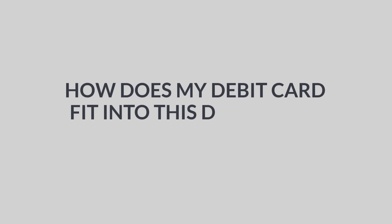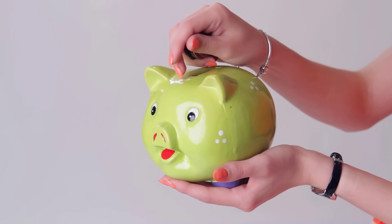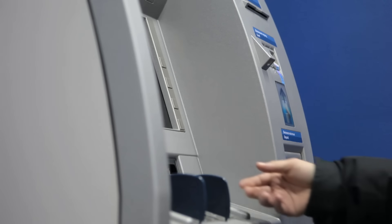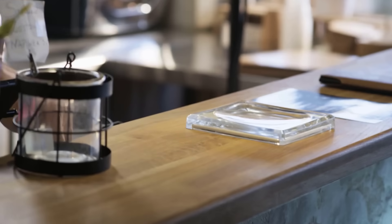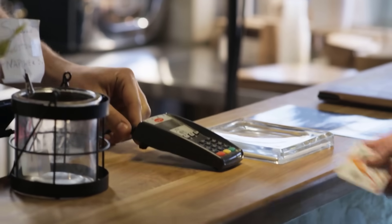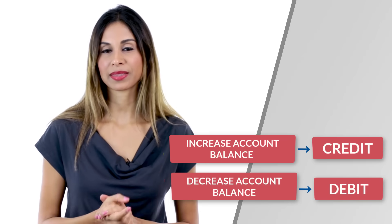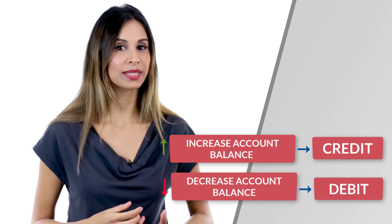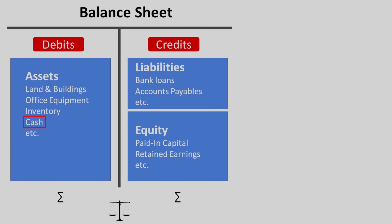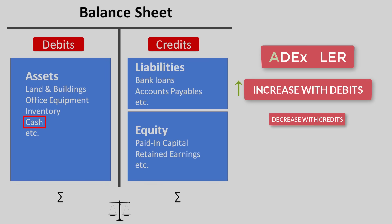How does a debit card fit into this? This creates confusion for a lot of people. When you put money in your account, the bank will credit it. When you take money out, they will debit it. A debit card is issued for the purpose of accessing your funds and taking money out of your account. This seems like the opposite of what we just learned, because cash is an asset and according to ADEXLER resides on the debit side — so adding money means you debit it, and taking money out means it gets credited.